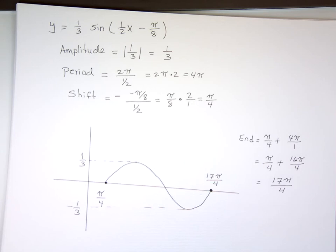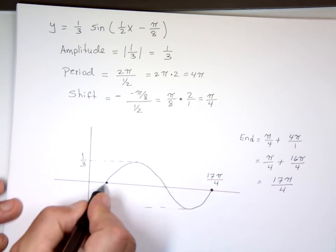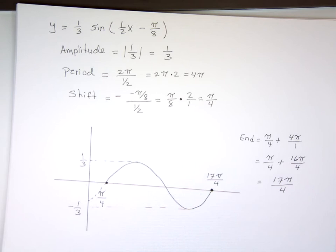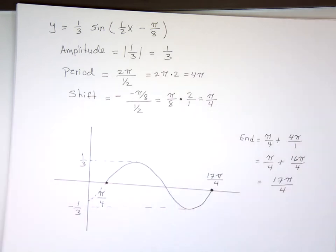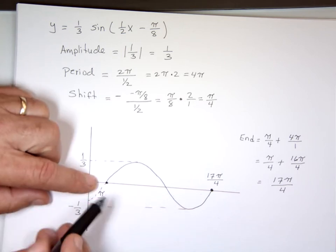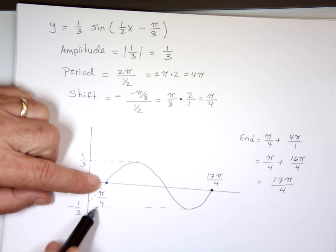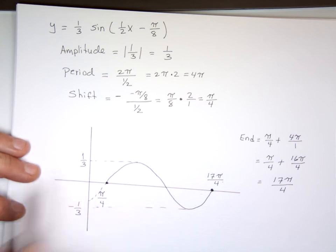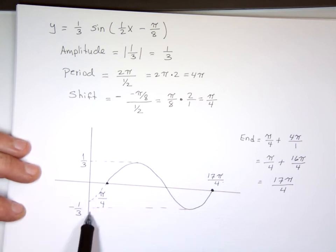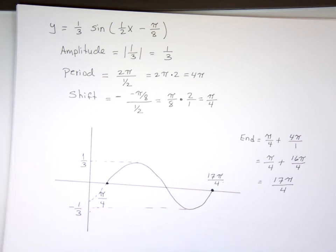Usually when they give you the graph of this they don't just graph one piece — they extend it, because the function is continuous and doesn't really stop. What you have to do is check: does it start at π/4? Does it end at 17π/4? Does it go as high as one third and as low as negative one third? If that matches, that is the correct graph. They'll give you four choices and you decide which one is correct.